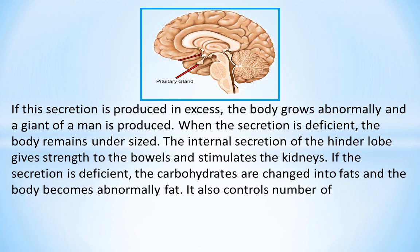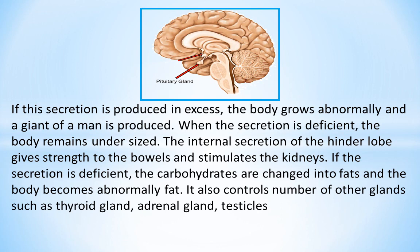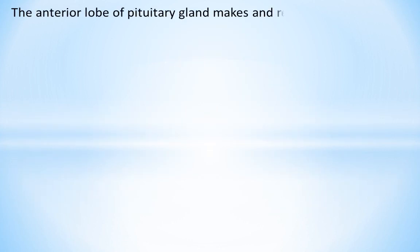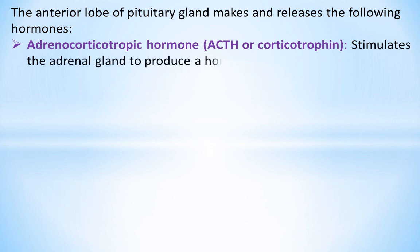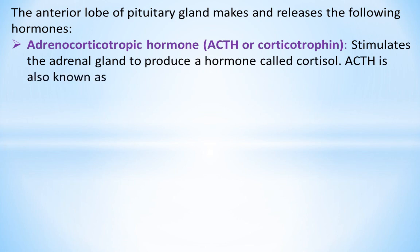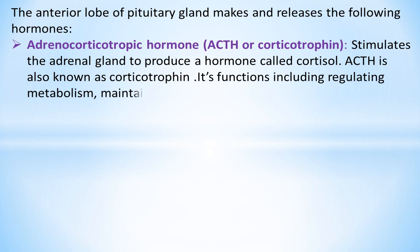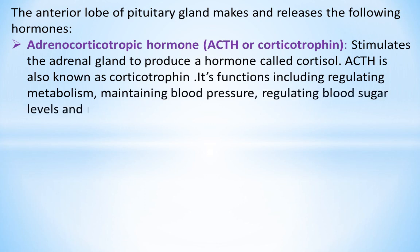The pituitary gland also controls a number of other glands, such as the thyroid gland, adrenal gland, testicles, and ovaries. The anterior lobe makes and releases adrenocorticotropic hormone (ACTH or corticotrophin), which stimulates the adrenal gland to produce cortisol. Its functions include regulating metabolism, maintaining blood pressure, regulating blood sugar levels, and reducing inflammation.